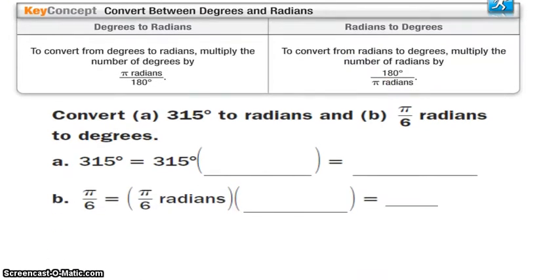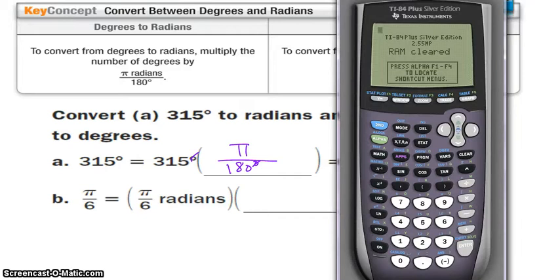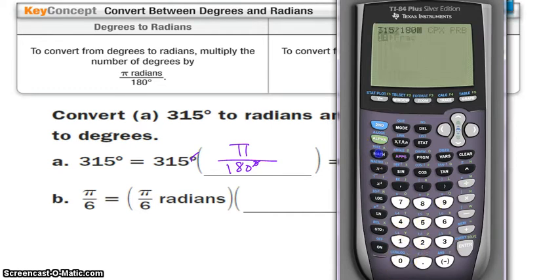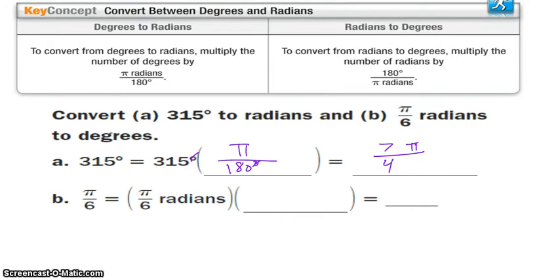If I have 315 and I want to convert that to radians, I currently have degrees, so I want to make sure I have degrees in the bottom so that my units cancel out. I've got 315 over 180. You want to simplify this as a fraction, as an improper fraction. I get 7π over 4. On your calculator, to get the fraction version of a number, if I take 315 divided by 180, you can hit math fraction right away because it doesn't really matter what the decimal is. I get 7 over 4, depending on which OS you have.